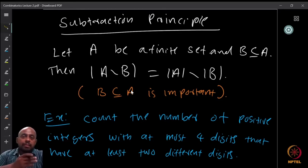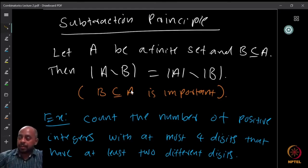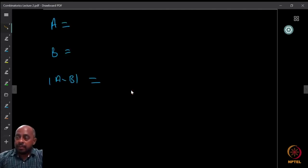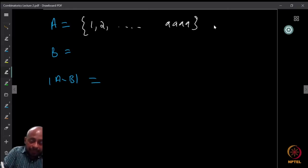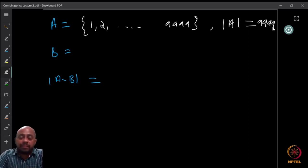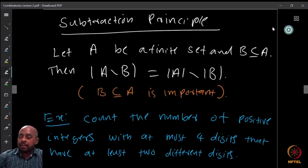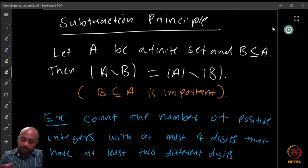Using the subtraction principle: let A be the set of all positive integers with at most four digits. The smallest five-digit number is 10,000, so A contains 1 through 9999, giving |A| = 9999. We then define B as those integers with at most four digits that use only one distinct digit, and subtract |B| from |A| to get the count we want.